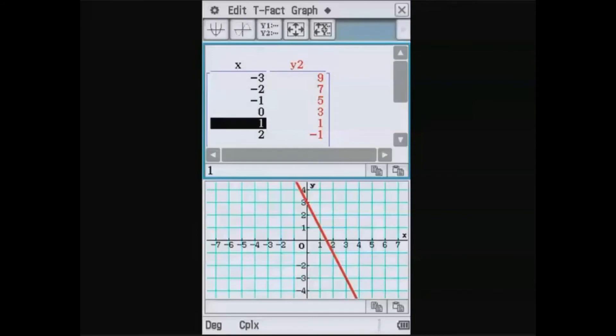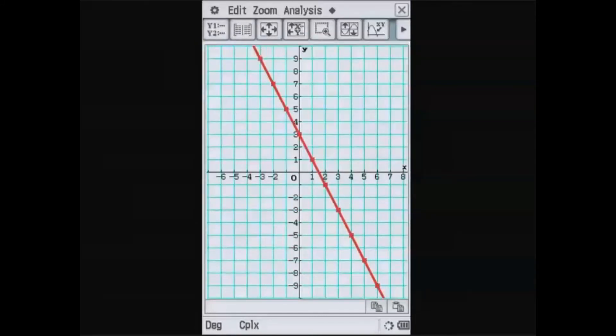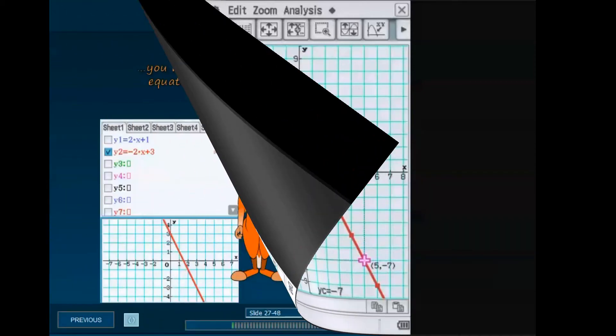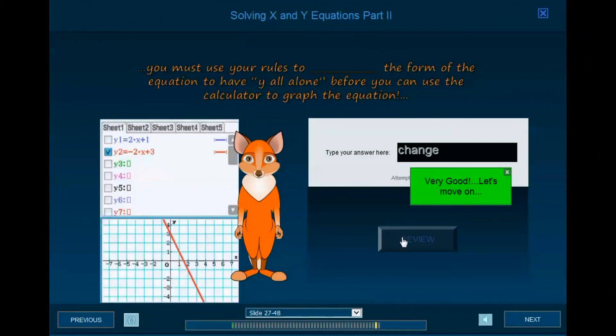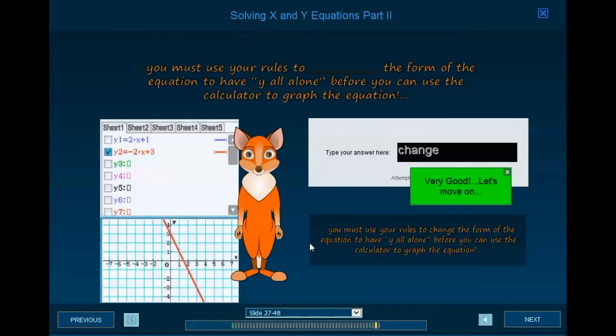When we look at the graph again in full screen view, and we go to analysis and use our trace function, we can trace along the graph, and we see that there are many ordered pairs that make our equation a true statement. Nicely done. You must use your rules to change the form of the equation to have y all alone before you can use the calculator to graph the equation.